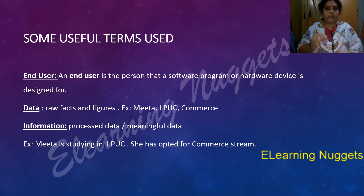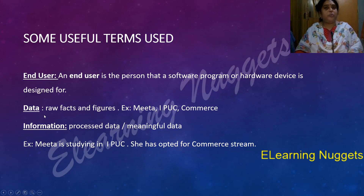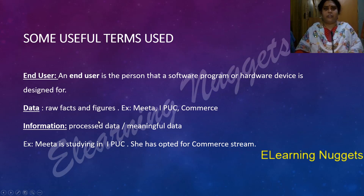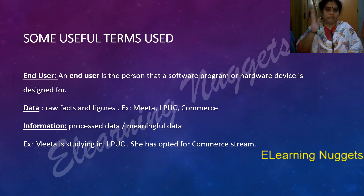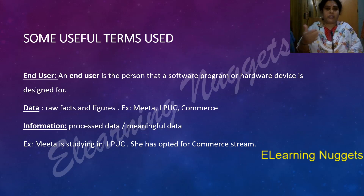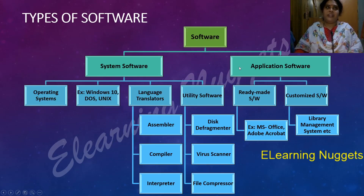In our day-to-day life, the words data and information are used interchangeably — many of us use data for information and information for data. It is like colloquial language where we say 'Bangalore' and 'Bengaluru' — they mean the same, but officially we have to write it as Bengaluru since the name has been changed.